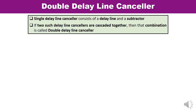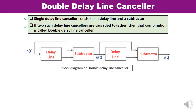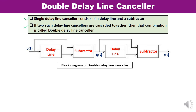Now let us talk about the double delay line canceler. A single delay line canceler consists of one delay line and a subtractor. In a double delay line canceler, two such units are cascaded. In the block diagram, you can see two delay lines and two subtractors — one single delay line canceler plus one more. If you had to draw three delay line cancelers, there would be three units. If pt is the input to the first delay line, qt is the output of the first delay line canceler, and rt is the output of the overall double delay line canceler stage.